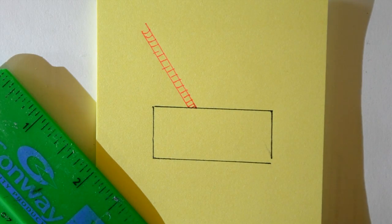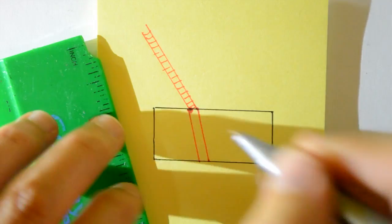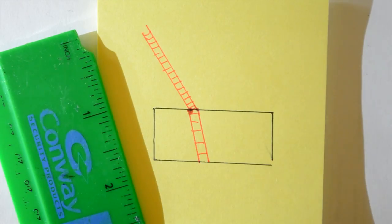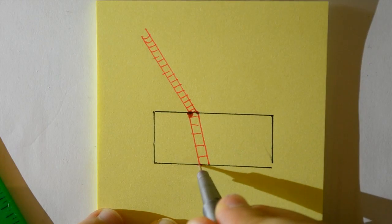Light travels slower through the glass block. So the same thing happens as what happened with the car. As soon as one part of the wave touches the slower, denser glass, it bends and starts moving slower.